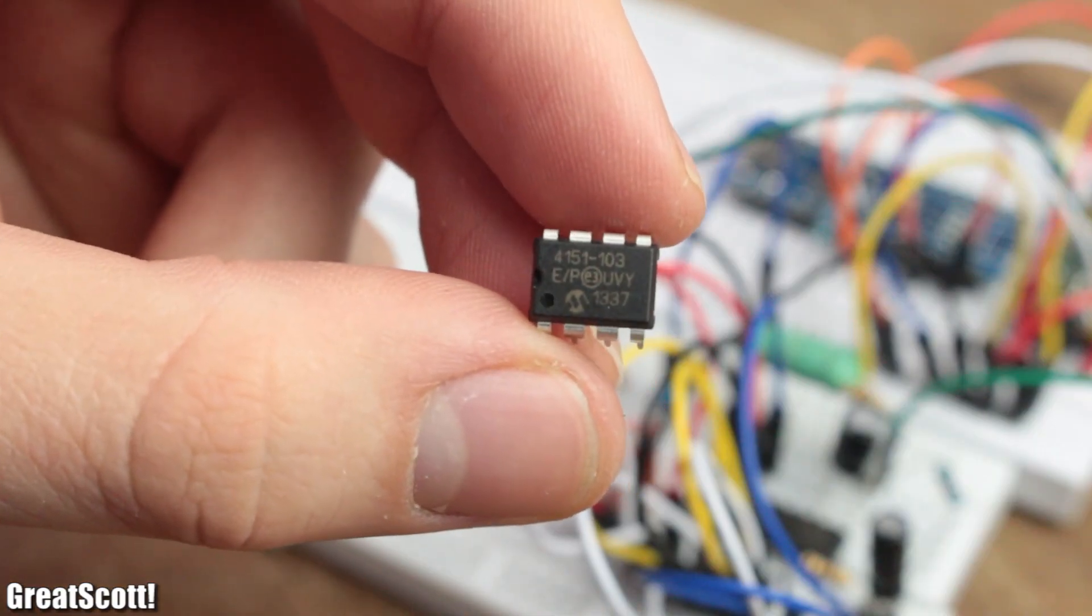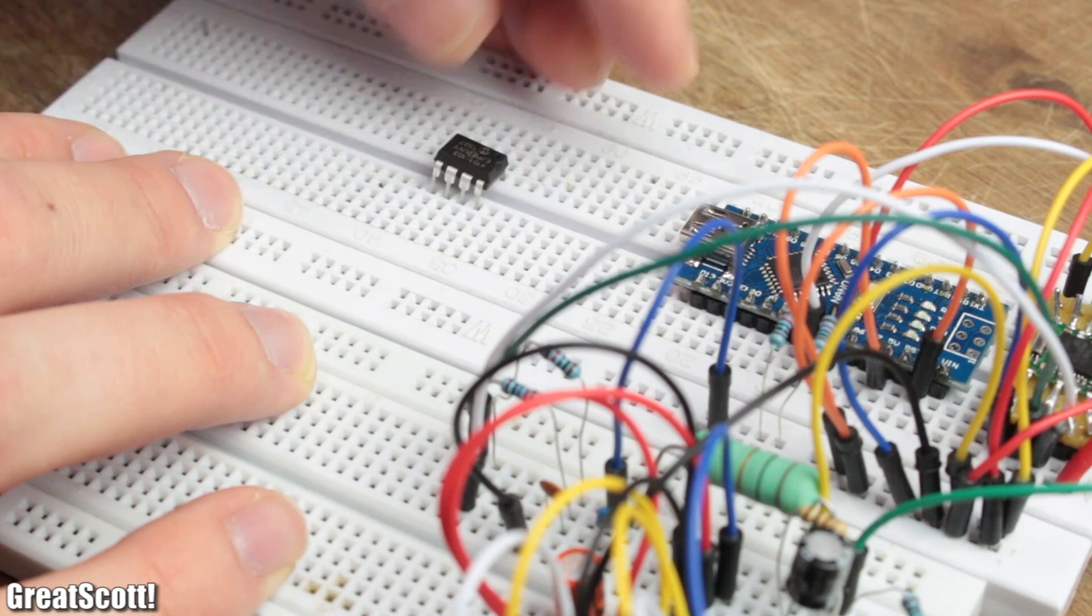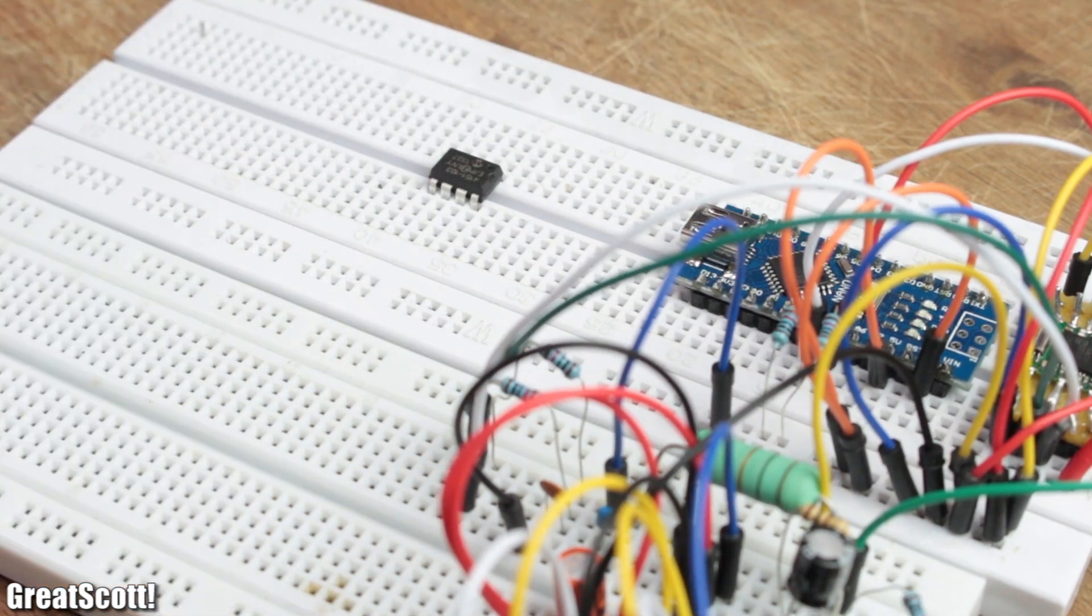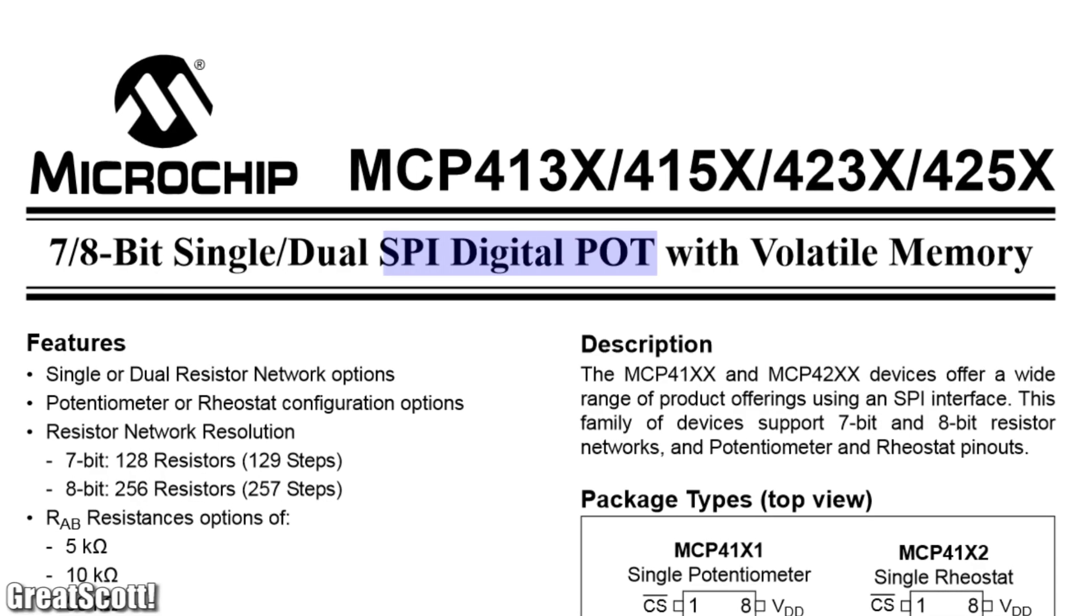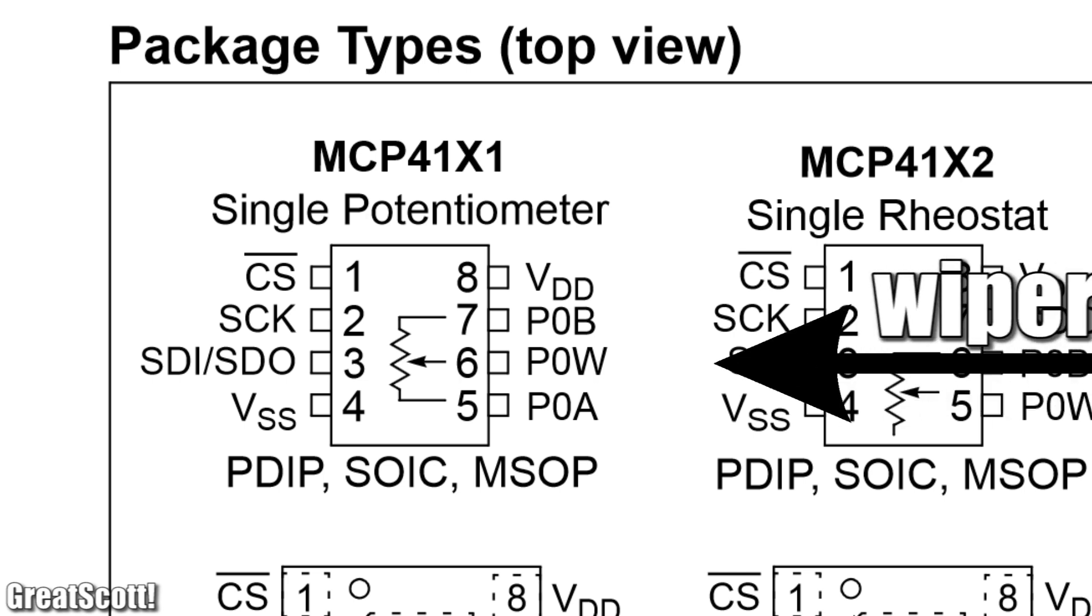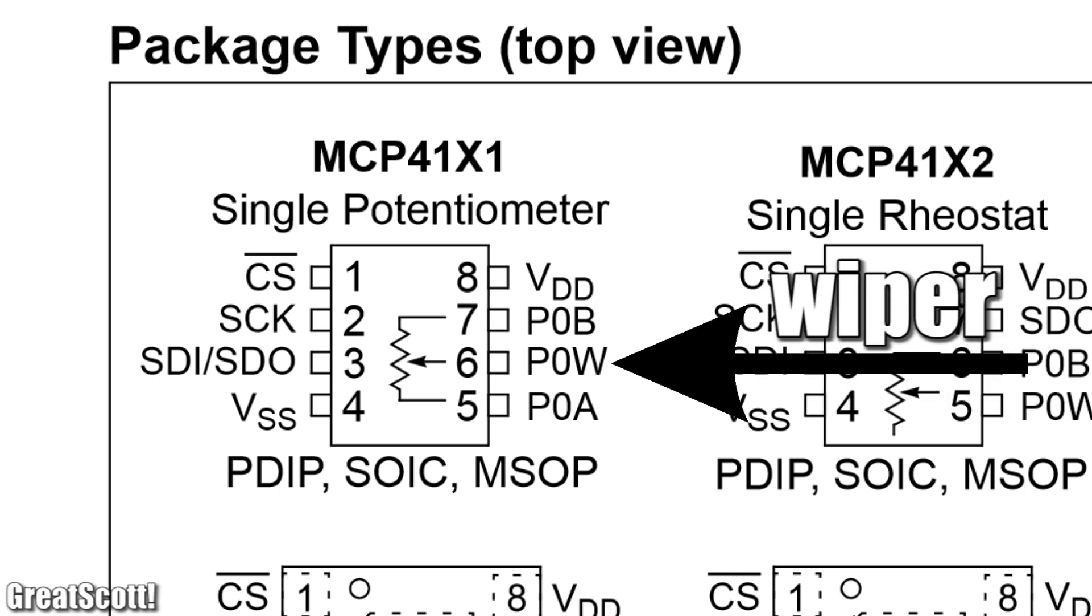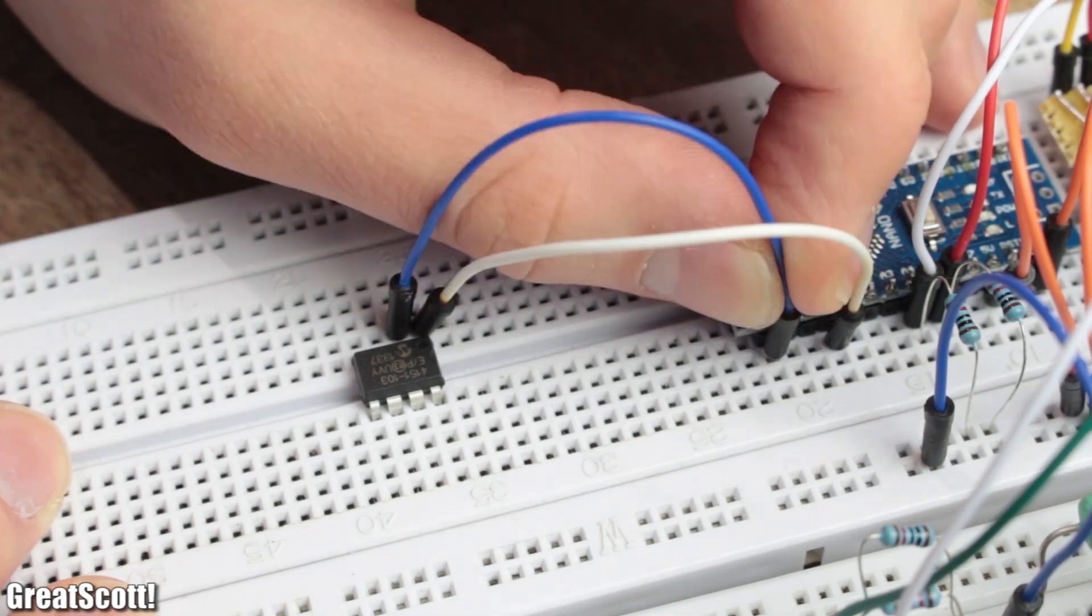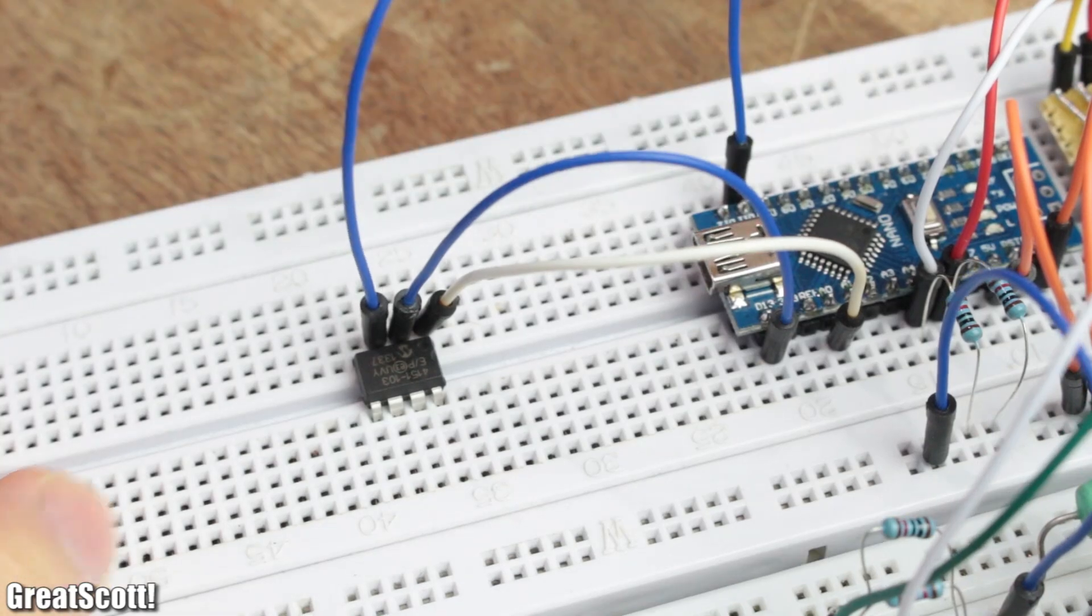Now in order to control the volume I used the MCP 4151 8-bit 10 kilo ohm digital potentiometer. It uses the SPI communication interface to set its wiper position, which means two things.